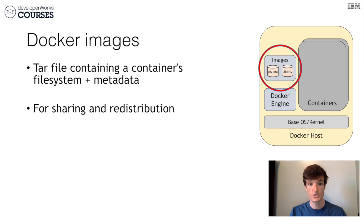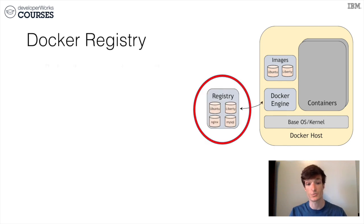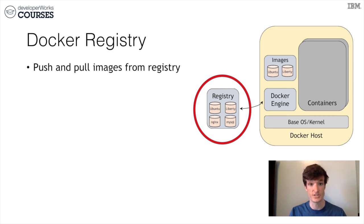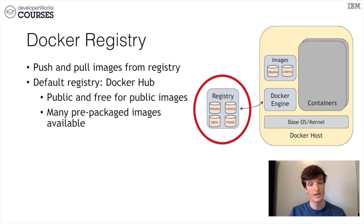To share images, we're going to use a central registry. We can push our images to the central registry and pull from it to download other images. The default registry that Docker Engine knows about is Docker Hub. This is a public registry — it's free to use. Today for Lab 2, we're going to create an account on Docker Hub and push our images to it.